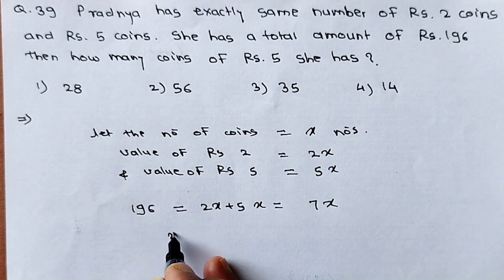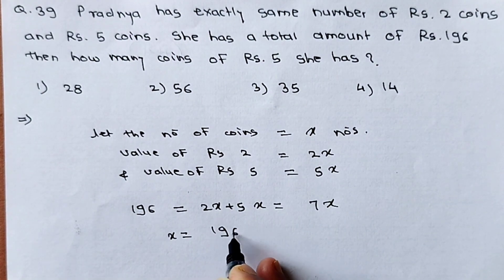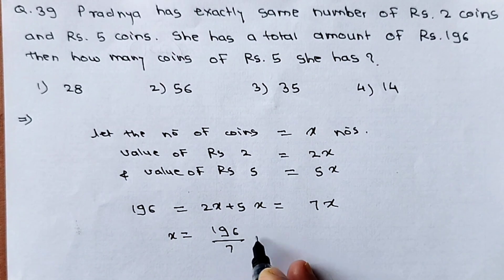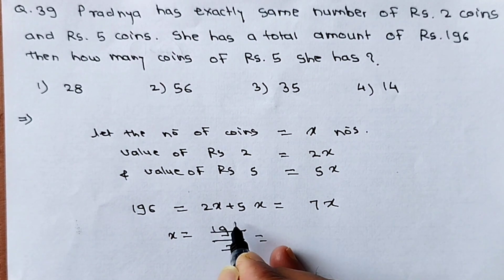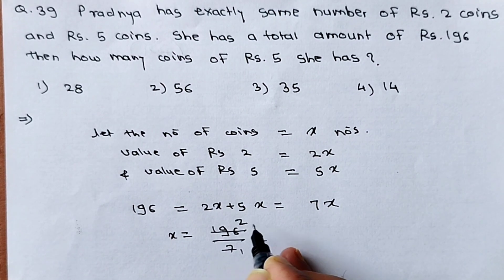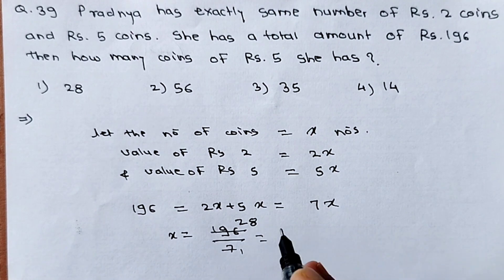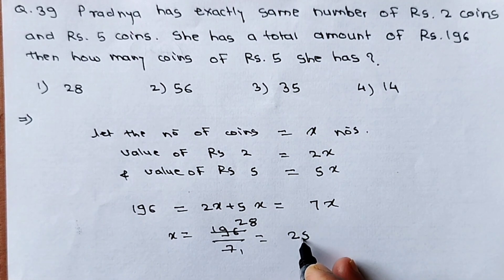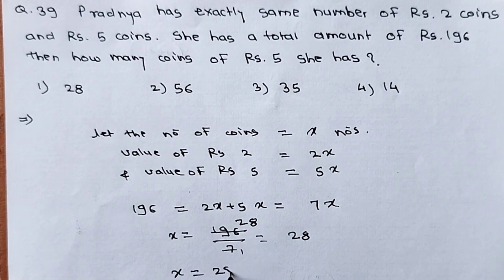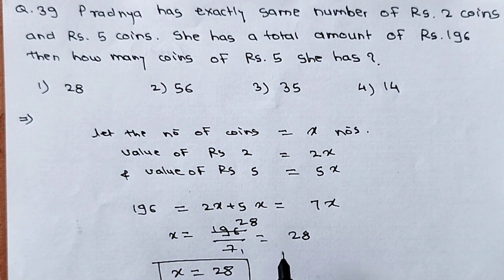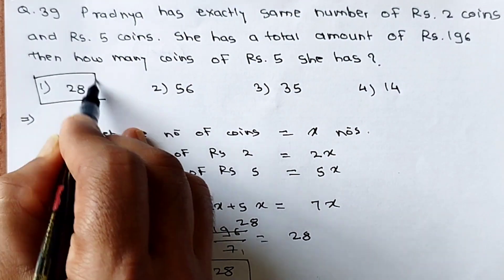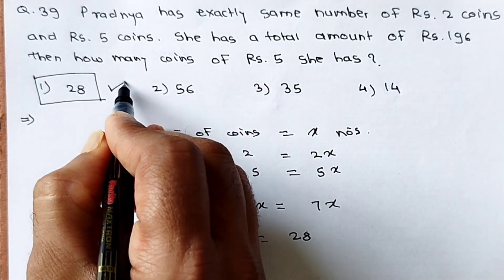Simplifying: 196 divided by 7 gives 28. So x equals 28. We got the number of coins as 28, which is the same for both rupees 2 and rupees 5 coins. The answer is the first option.